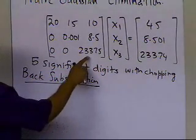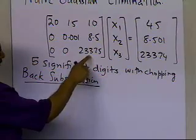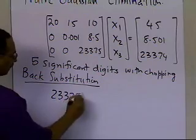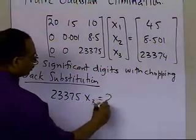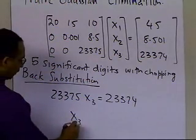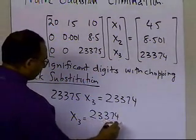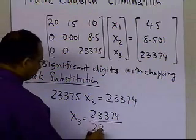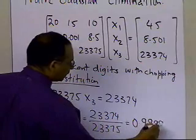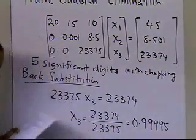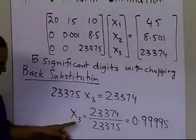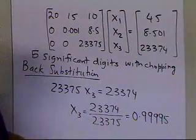So the first equation which I need to solve is the last equation, because that's why it's called back substitution. So I get 23375 x3 is equal to 23374. So in order to calculate x3, I will just divide the right-hand side by the coefficient of x3, and I get 0.9995.